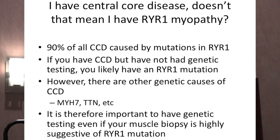A common question: I've been told I have central core disease — that means I have an RYR1 mutation, right? The answer is probably. About 90% of patients with central core disease will ultimately have a mutation in RYR1. However, there are some other genes that can cause central core disease, such as MYH7, which can cause the same muscle biopsy appearance. This is a reminder of the importance of having a specific genetic diagnosis, because it helps put the whole picture together.